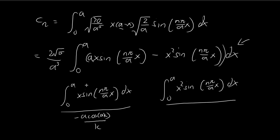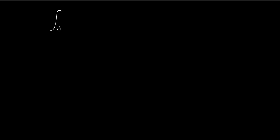In the last video, we already found what this integral is equal to. So now let's focus on solving this integral, and then once we've done that, we can substitute it back into this expression to find what cn should be. All we have to do is solve this x squared times sine function. To simplify things, I'm going to write this as kx, where k is equal to nπ divided by a.